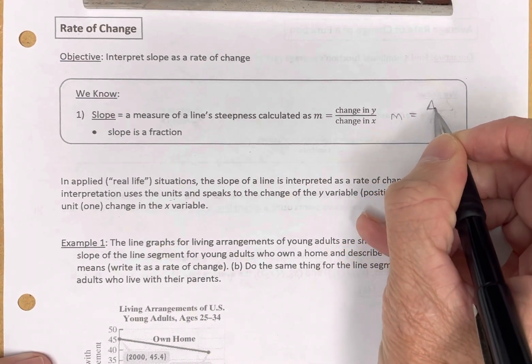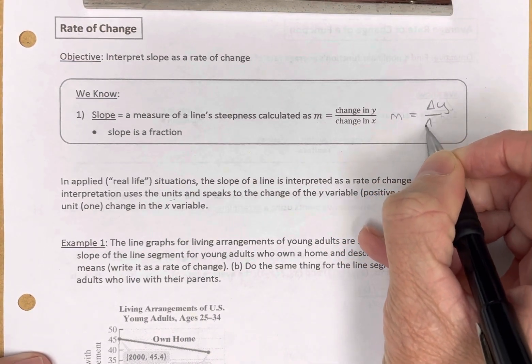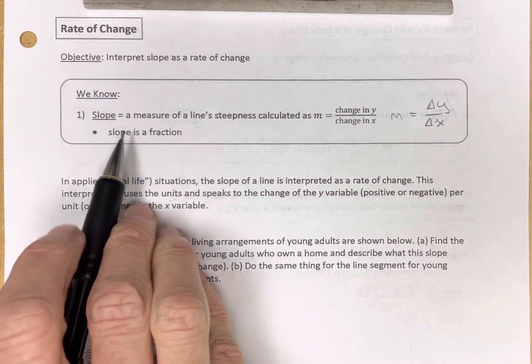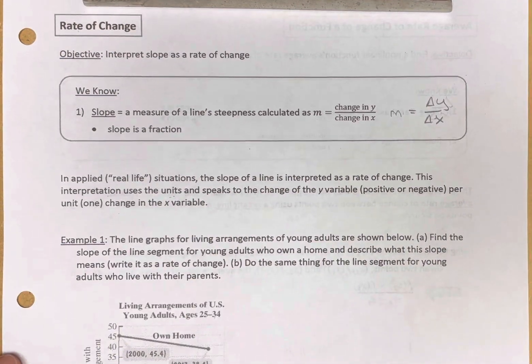Calculated as change in y over change in x. We've been abbreviating this as m equals delta y over delta x. And of course, slope is a fraction.